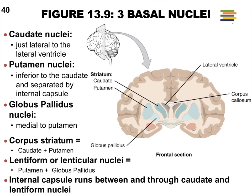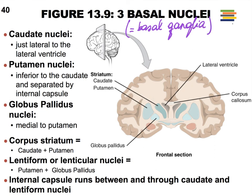The next set of nuclei, also located deep within the white matter, we call the basal nuclei. However, you'll very often still see these referred to as the basal ganglia — even instructors may use that term. Try to use 'nuclei' on exams, because a ganglion technically refers to a collection of cell bodies outside of the CNS. It's an old term that's difficult to eliminate from anatomy.